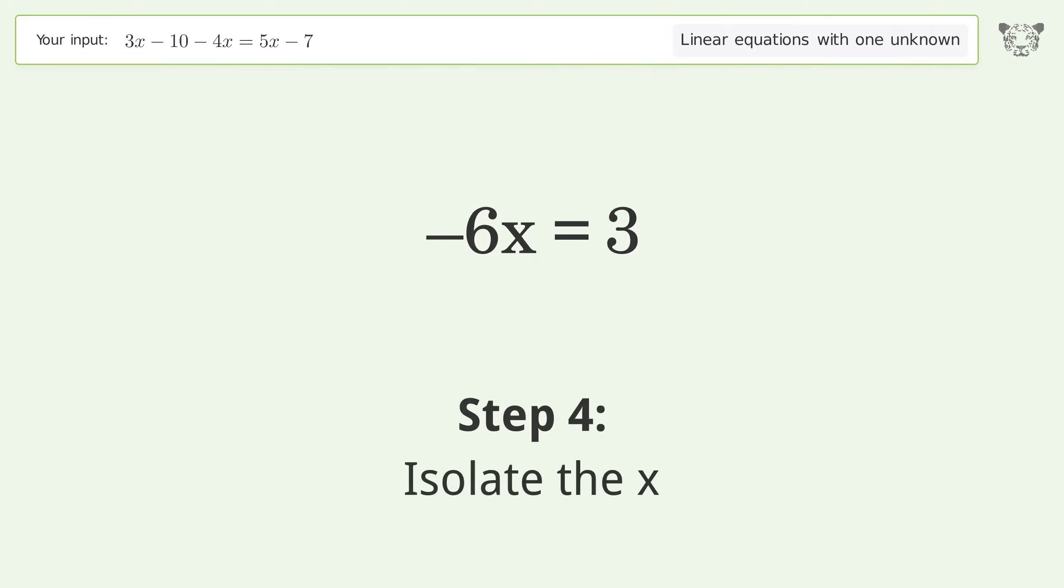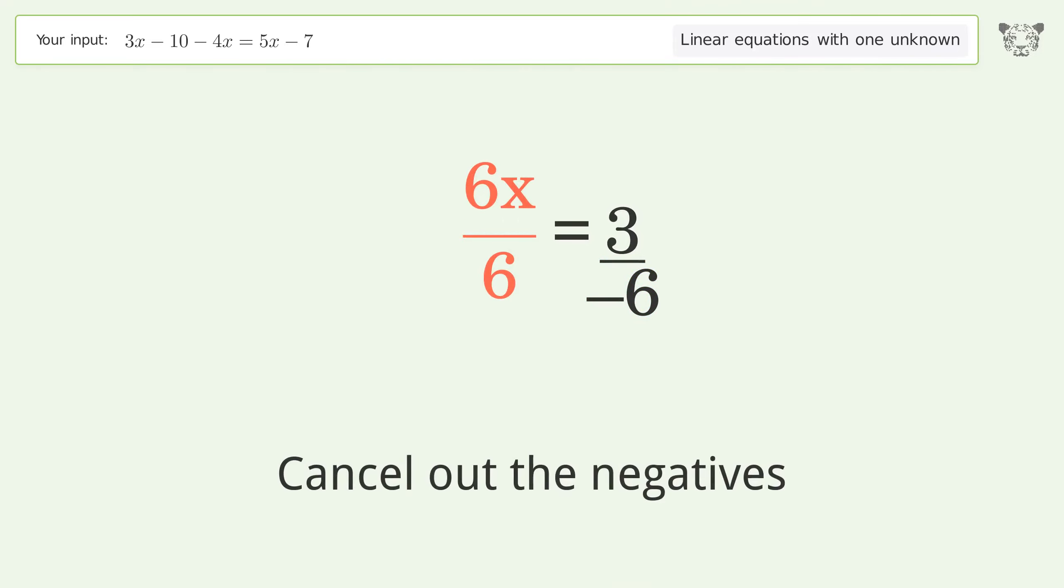Isolate the x. Divide both sides by negative 6. Cancel out the negatives. Simplify the fraction.